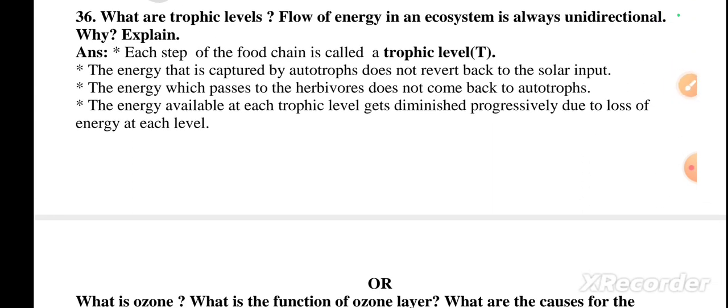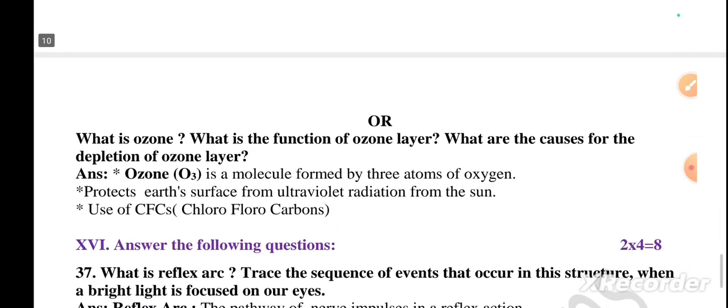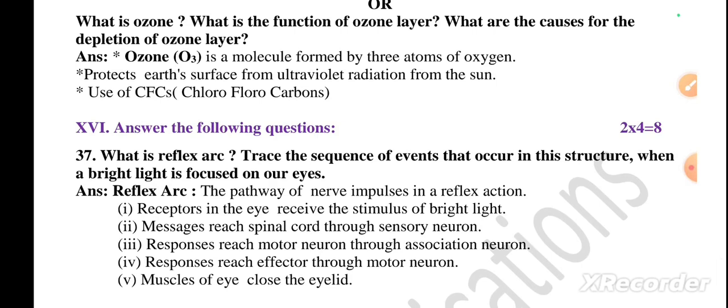Question number 36: what are trophic levels, and why is the flow of energy in an ecosystem always unidirectional? Each step of the food chain is called a trophic level. The energy captured by autotrophs does not revert back to the solar input; energy which passes to herbivores does not come back to autotrophs; energy at each trophic level gets diminished progressively due to loss at each level. Another question: what is the function of the ozone layer and causes of its depletion? Ozone (O₃) is a molecule formed by three oxygen atoms that protects earth's surface from ultraviolet radiation. The main cause of depletion is use of CFCs — chlorofluorocarbons.